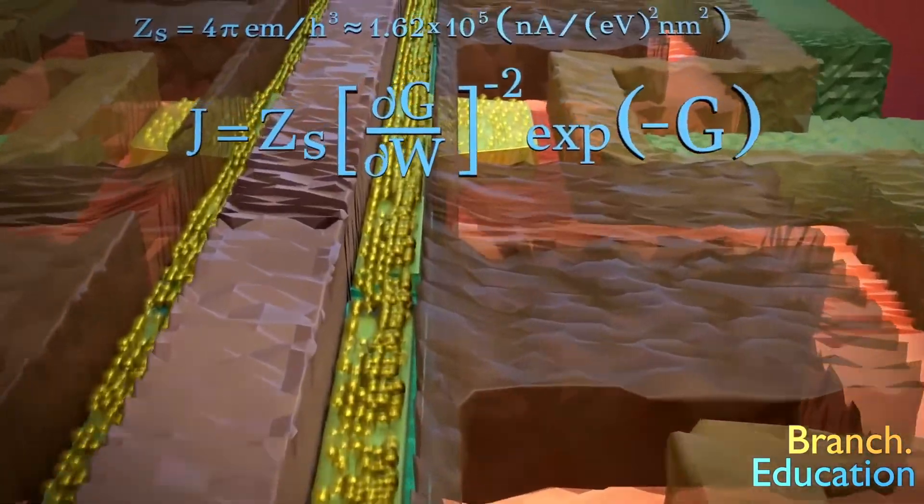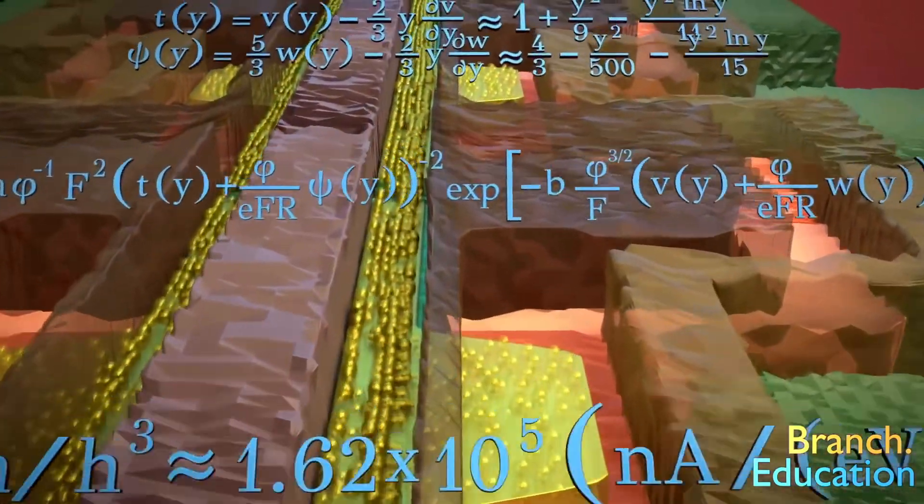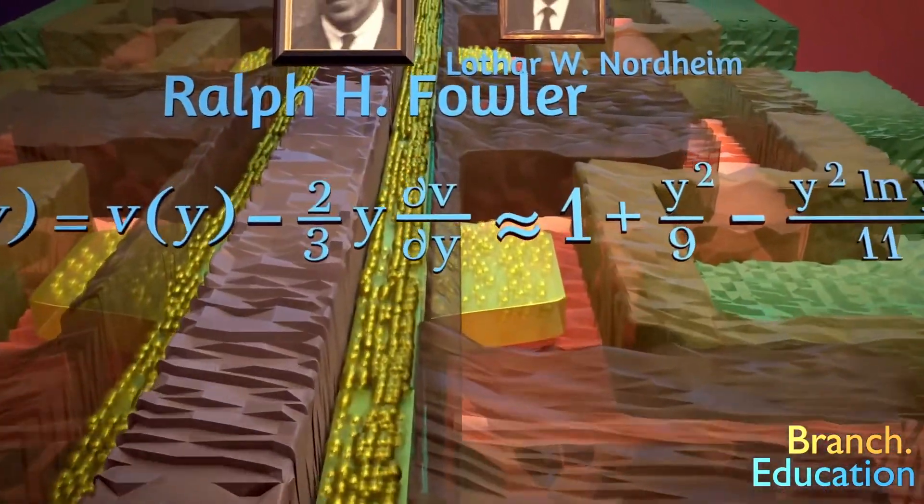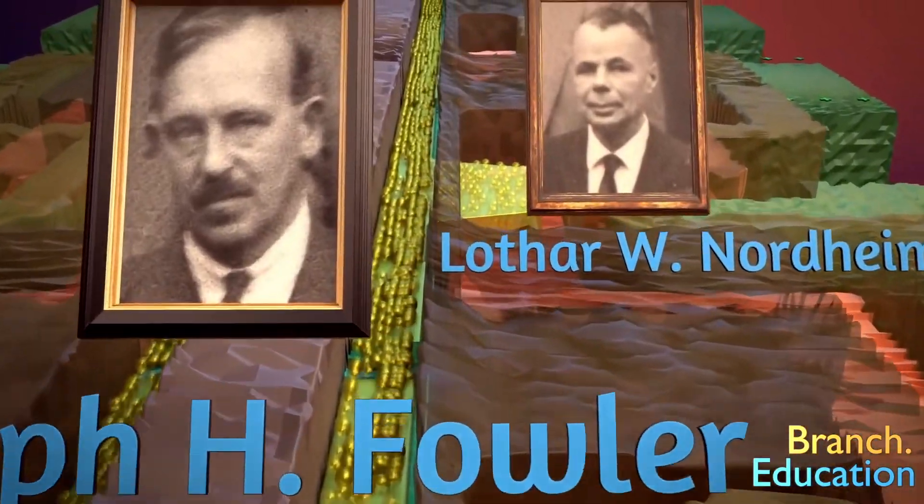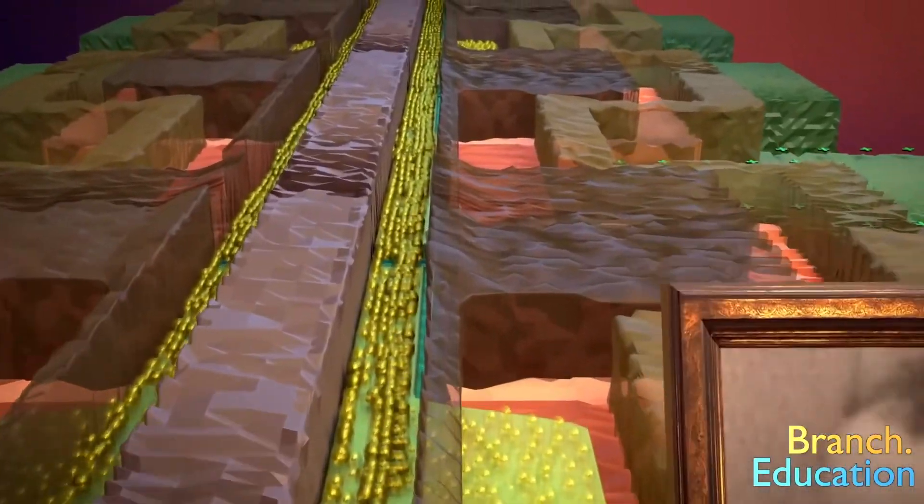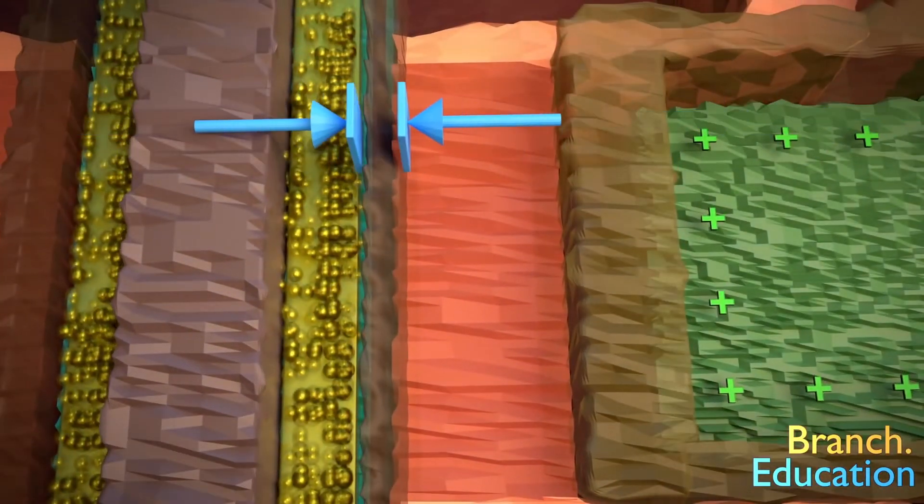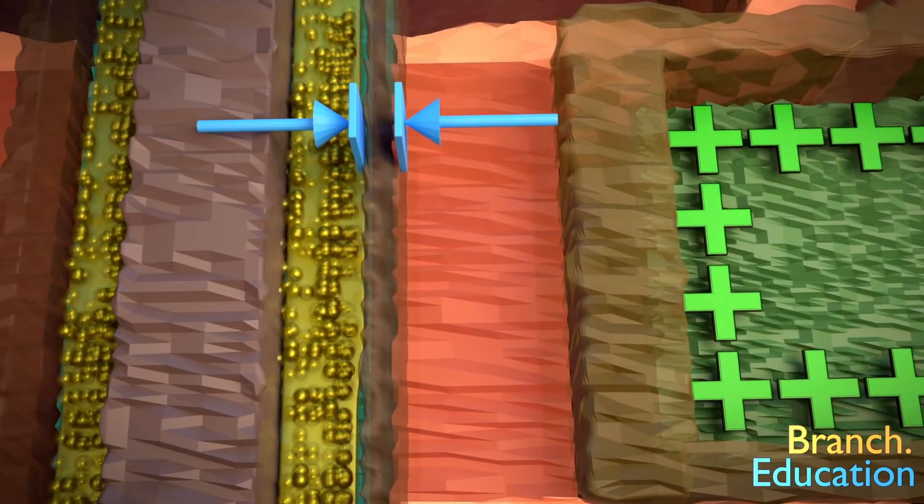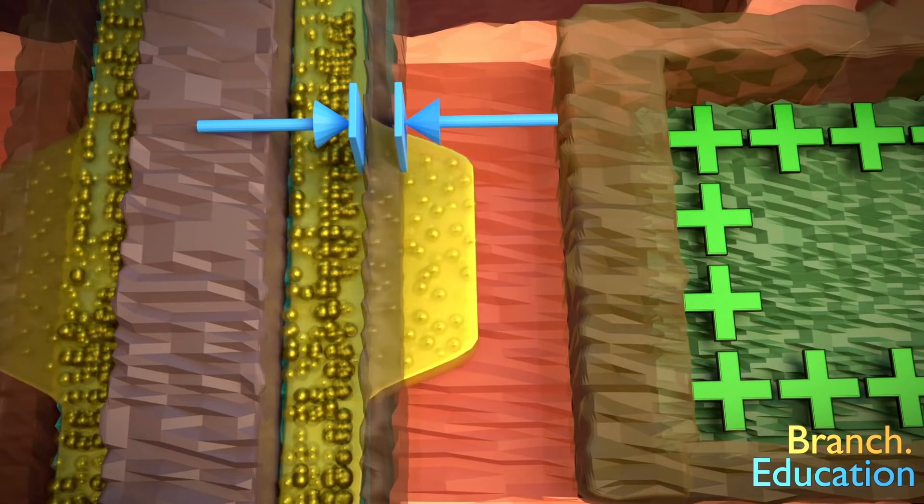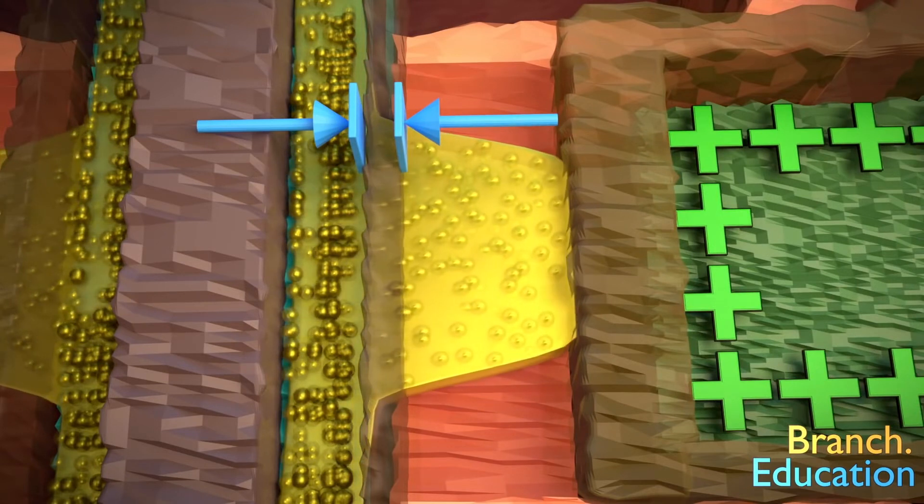Scientists and engineers use a set of quantum mechanical equations developed by Ralph Fowler and Lothar Nordheim in the 1920s for figuring out exactly how thin the dielectric barrier should be and how strong the gate voltage should be in order to tunnel electrons from the channel across the dielectric and into the charge trap.